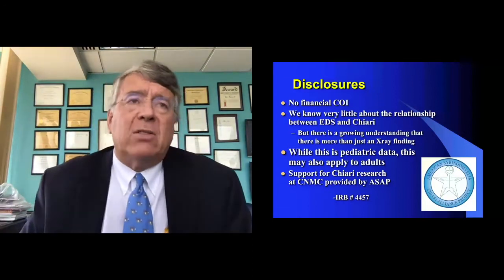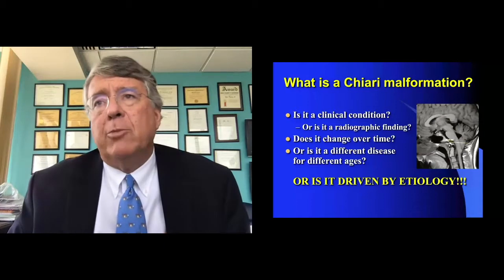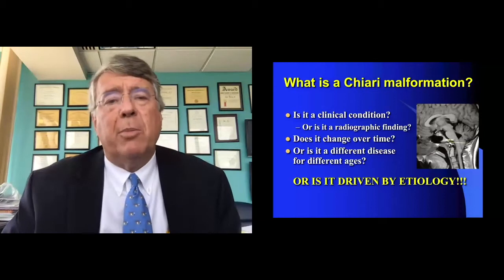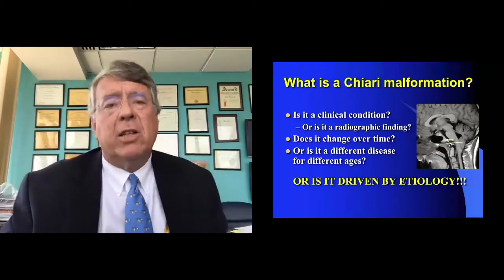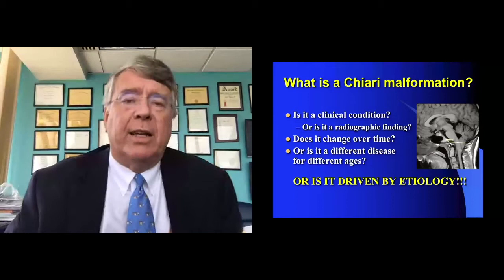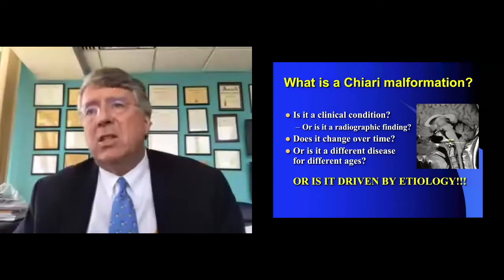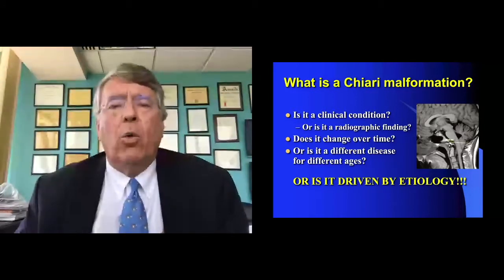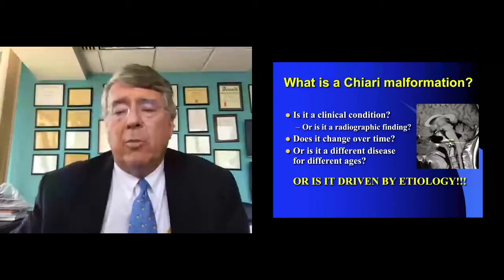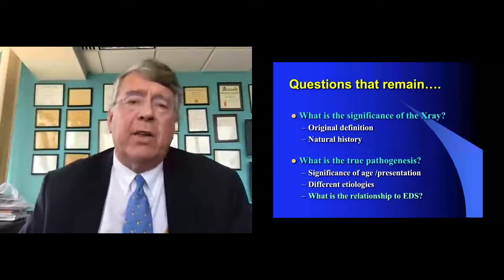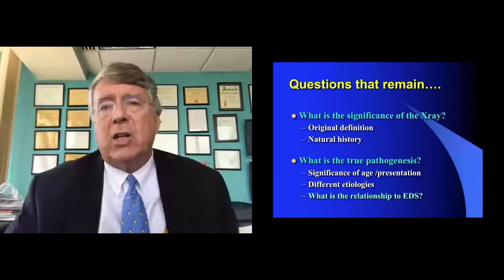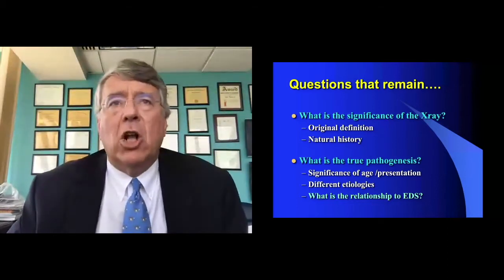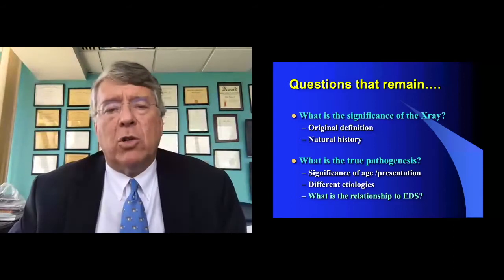The first thing you have to ask is: what is a Chiari malformation? Is this a clinical condition or a radiographic finding? Does it change over time? Does it affect kids differently than adults? What is the significance of the x-ray relative to the original definition? And of course, what is the natural history of the not uncommonly found incidental Chiari's that we'll talk about later?